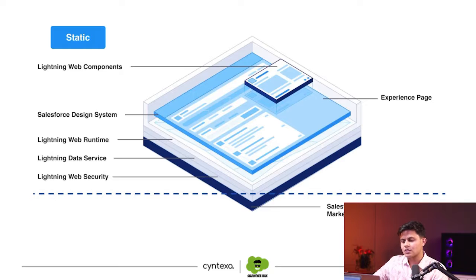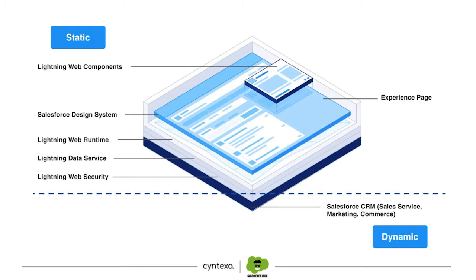With the help of a diagram, I'll be able to explain what that is. So let's look at it. Let's talk about the dark blue thing at the bottom — that's exactly what Salesforce CRM is: everything sales, service, marketing, commerce. On top of it there is Lightning Web Security, on top of that there is Lightning Data Service, and on top of it there is Lightning Web Runtime. Then there is the Salesforce Design System, then the experience page you've created, and then the Lightning Web Component embedded into that experience page. Let's try to understand how introducing Lightning Web Runtime improved the performance and scale of portals, communities, or experiences built on Experience Cloud.